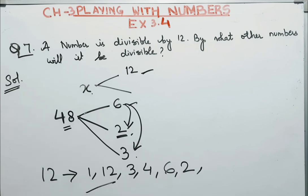These are the factors of 12. That means this number, by what else will it be divisible? It will be divisible by 1, 3, 4, 6, and 2. Here we complete exercise 3.4.